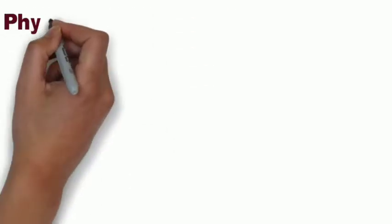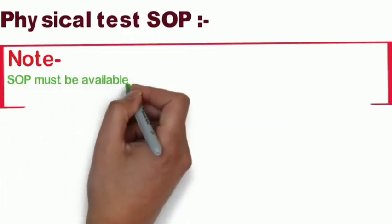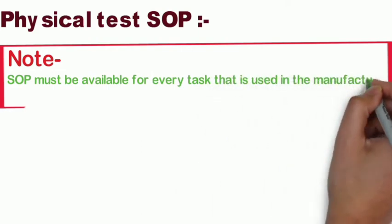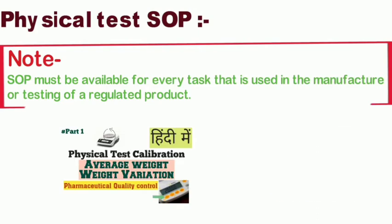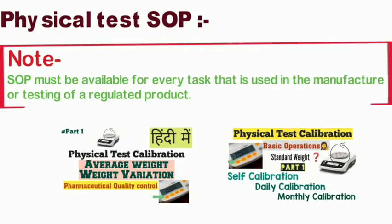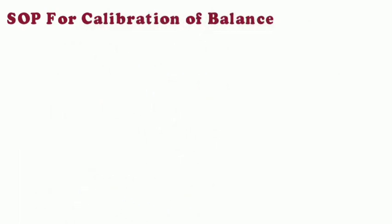We will focus on first of all physical test SOP. SOP must be available for every task that is used in manufacture or testing of regulated products. We already discussed calibration of a balance machine in my previous lecture. Now SOP for calibration of a balance. Later we will go with chemical tests like HPLC, dissolution assay, and other stages.